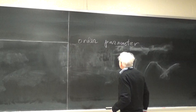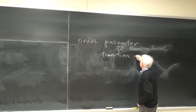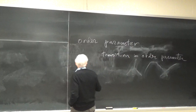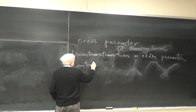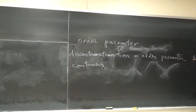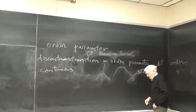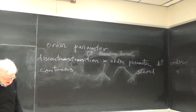That's an order parameter. And if you have a transition in the order parameter, you can have two kinds of transitions: you can have a discontinuous or a continuous transition. If it's discontinuous, this is first order. Discontinuous is first order; continuous is second order.